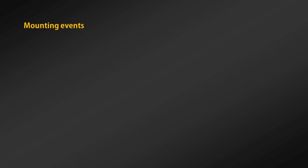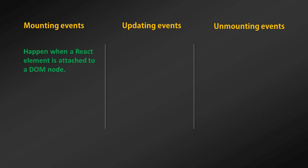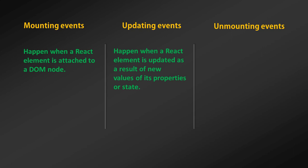The React component lifecycle belongs to three categories: mounting events, updating events, and unmounting events. The mounting events happen when the React element is attached to a DOM node. Updating events happen when a React element is updated as a result of new values of its properties being set. Unmounting events happen when a React element is detached from the DOM. Each and every React component has lifecycle events that are triggered at certain moments depending on what a component has done or will do.